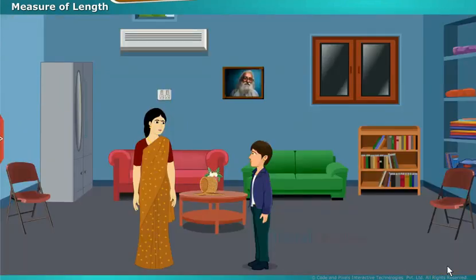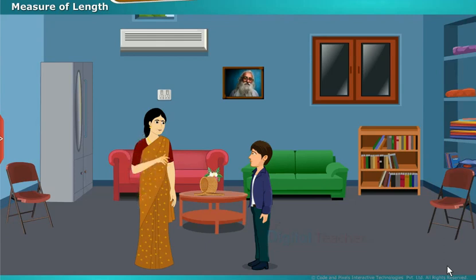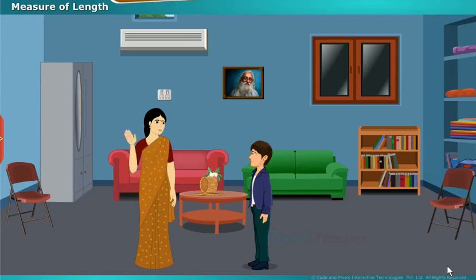After going home, his mother asked, 'Hey, where is the rope?' He showed it to her. She asked, 'Is this rope 10 cubits? Are you sure?' He said, 'Yes mom, he measured it in front of me.' After checking, she started shouting at him. The boy asked why, and she replied, 'You said it was 10 cubits but it's just 8 cubits.'